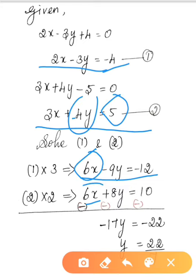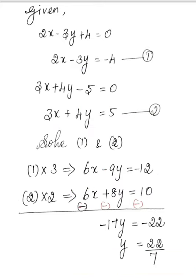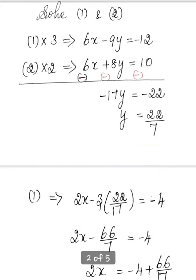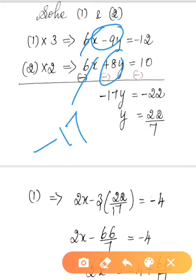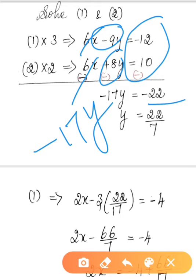Since the coefficient of x is the same (6x) in both equations, we subtract. 6x minus 6x cancels. Minus 9y minus 8y gives minus 17y. Right-hand side: minus 12 minus 10 gives minus 22. So minus 17y equals minus 22.